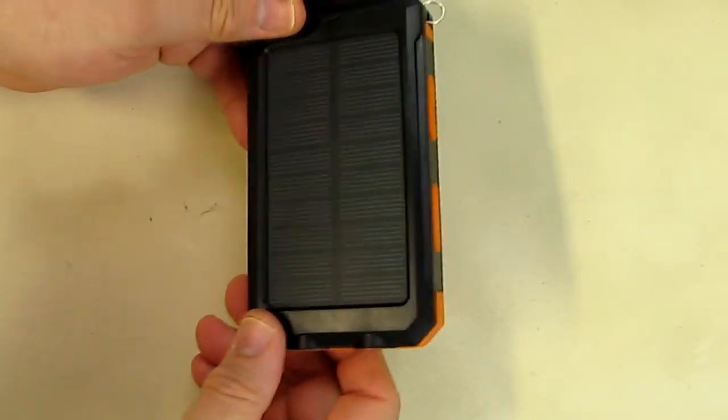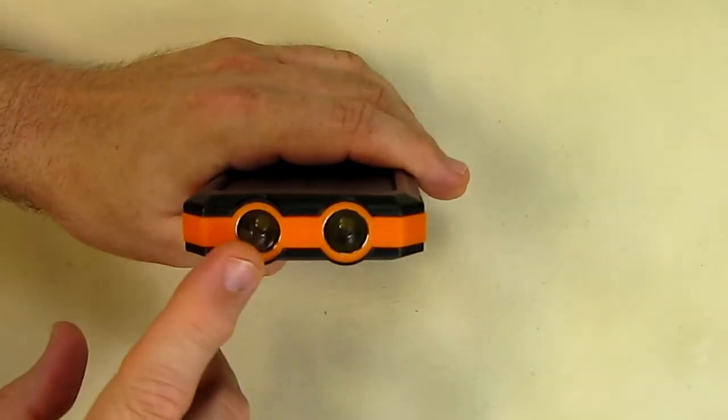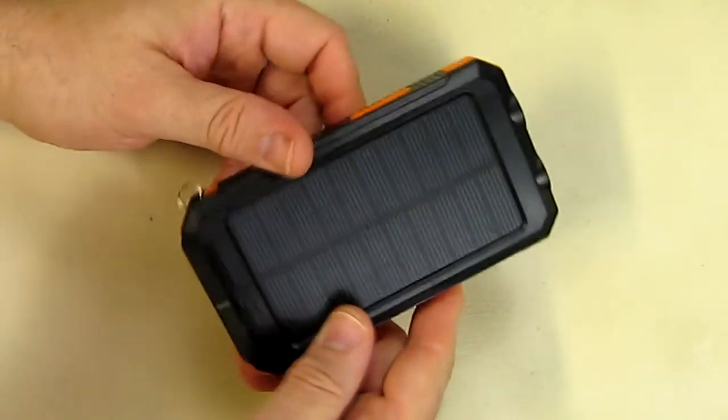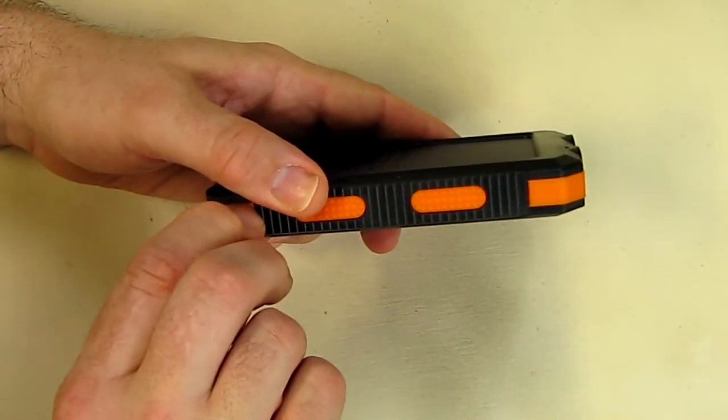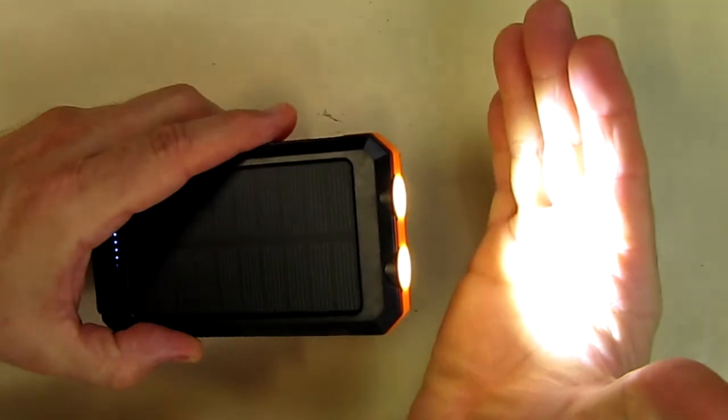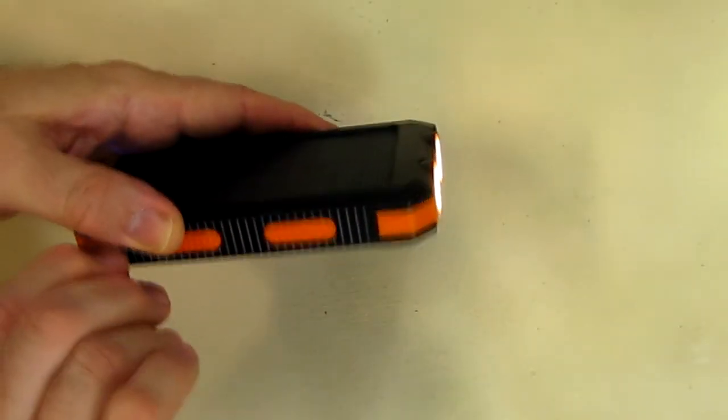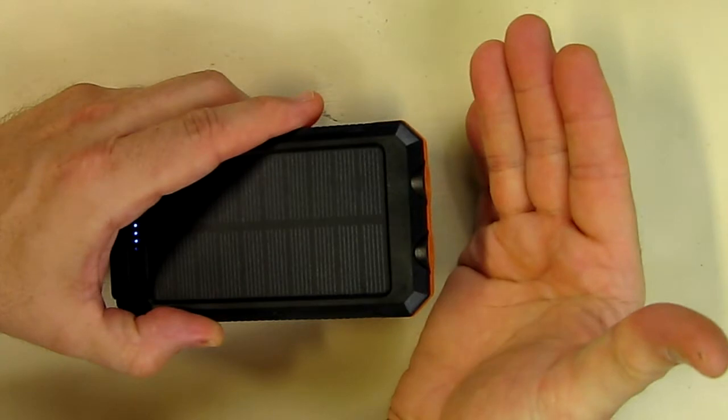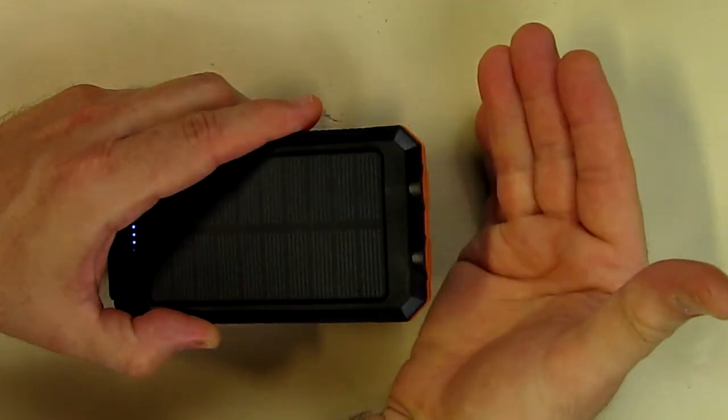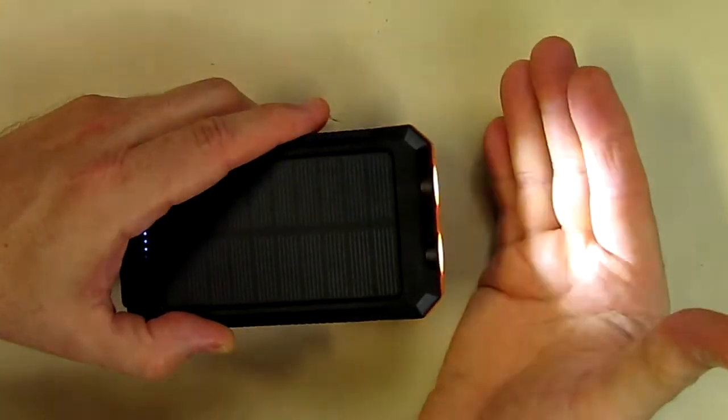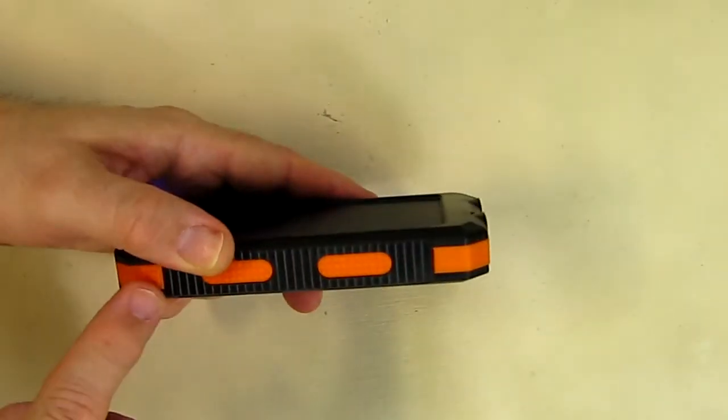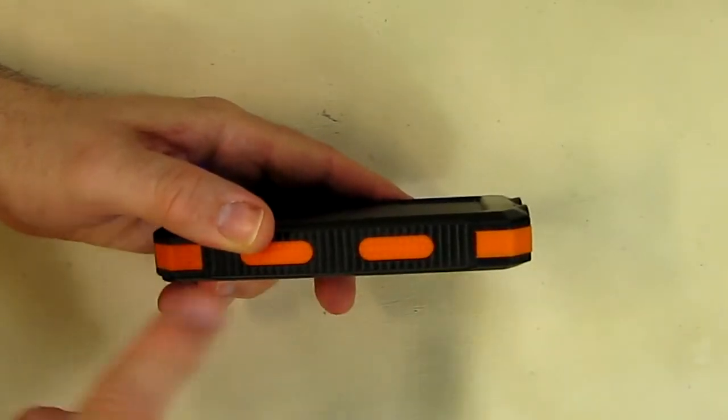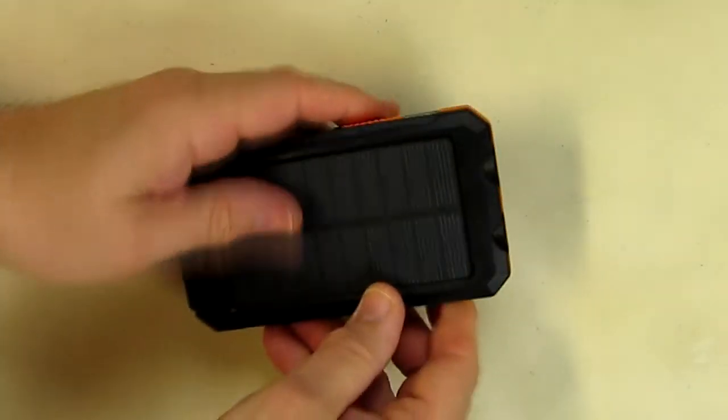One of the things that's on it which is pretty unique: it has two bright LEDs and there's a couple different modes. If you long press the power switch, that turns on the LEDs as you can see. If you pulse it again, that gives the SOS mode for emergencies. If you press it a third time, that's rapid mode, and then a fourth time should turn it off. You can also turn it off by long pressing in any of those modes.